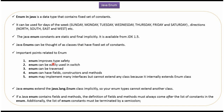Here we can see important points related to enum. Enum improves type safety. Enum can be easily used in switch. Enum can be traversed. Enum can have fields, constructors and methods. Enum may implement many interfaces, but enum cannot extend any class, because enum internally extends the enum class, which belongs to the java.lang package. So enum types cannot extend another class.